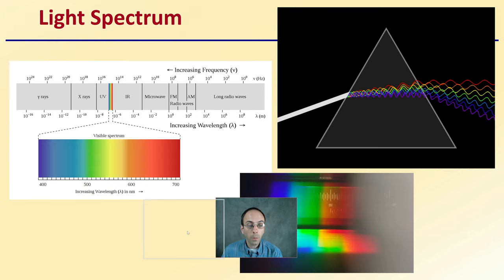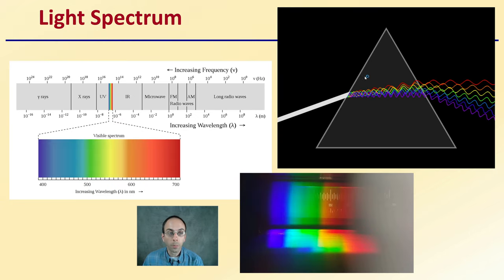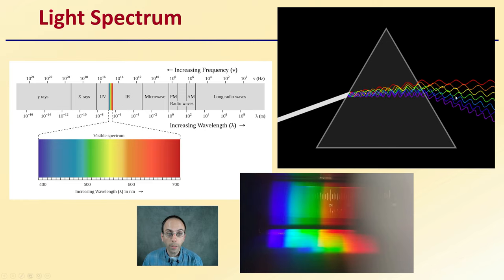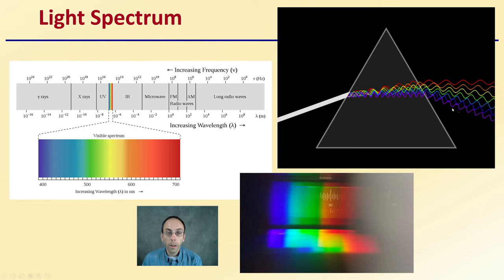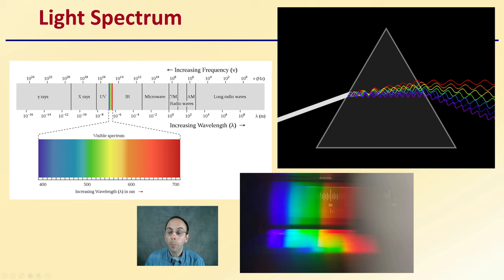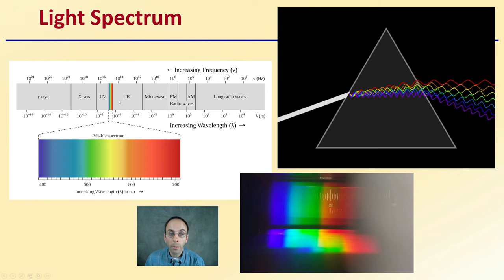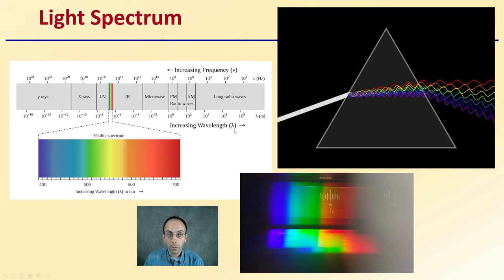We'll start with the light component — the light spectrum. We're looking here at the visible light spectrum. All these different wavelengths of light correspond with different colors. The reds are the longer wavelengths compared to the violets and blues, and these are all measured in nanometers. For plants, we're also seeing increased importance with the ultraviolet spectrum as well as the infrared, which are areas outside of the visible spectrum.